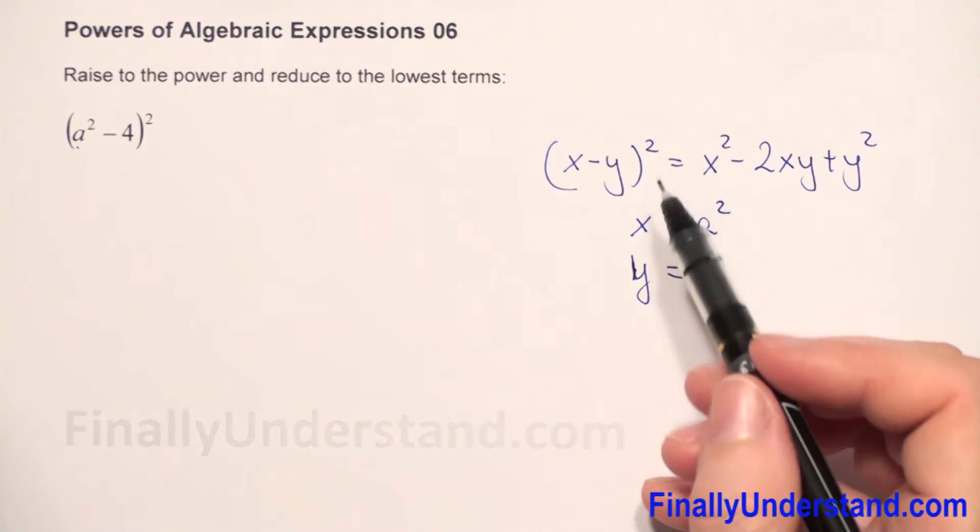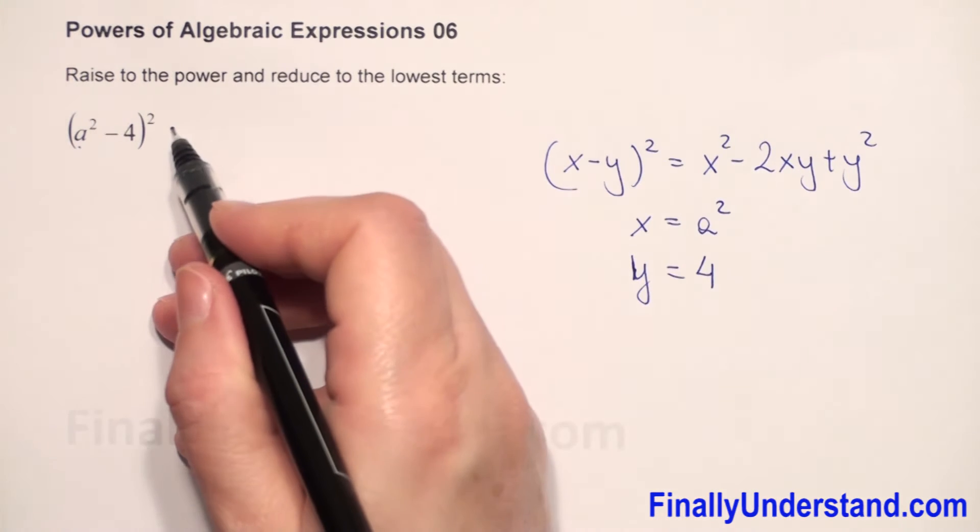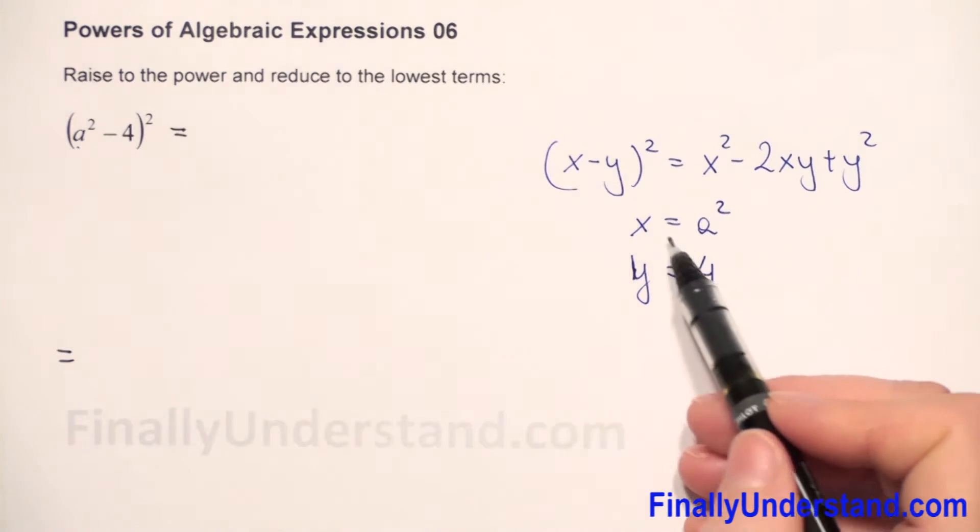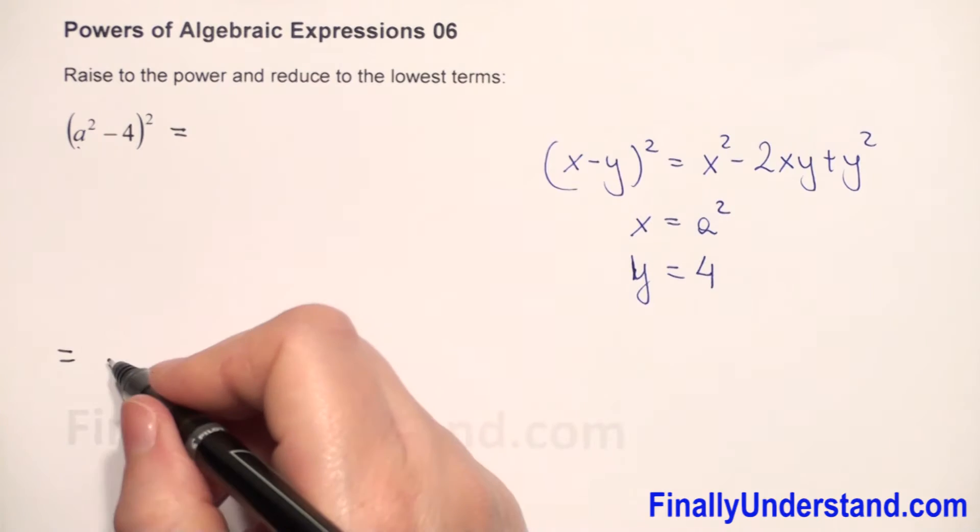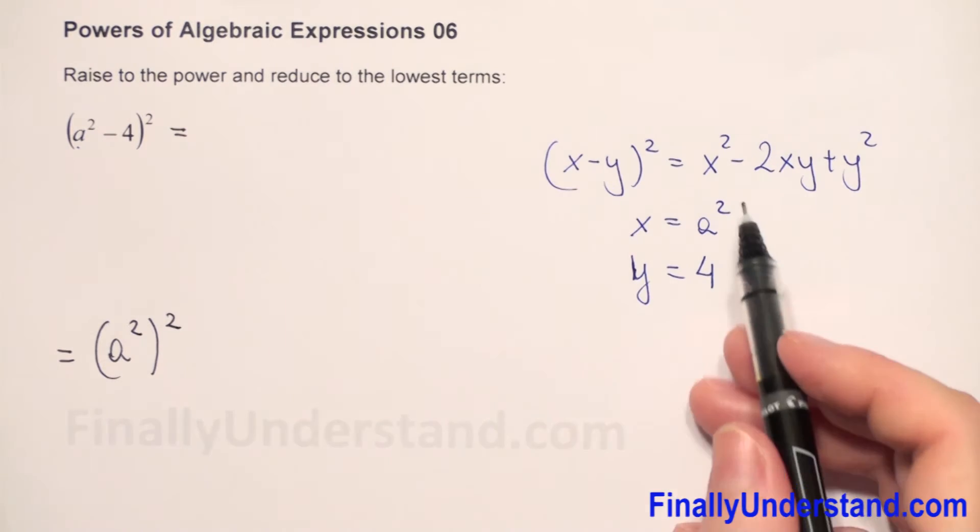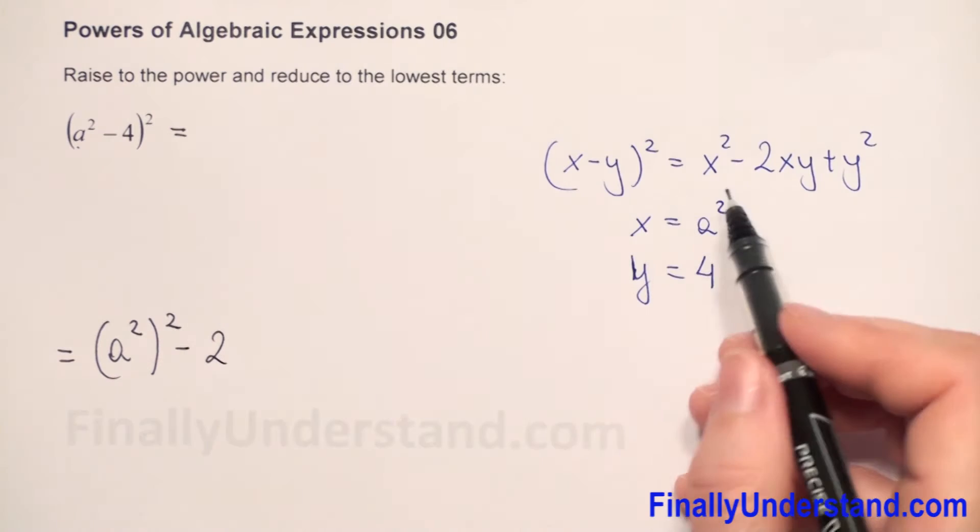Now we will just use this formula. So this is equal: first we have x to the second power, our x is a squared, so we have a squared to the second power. Next we have the negative sign 2.